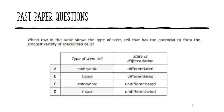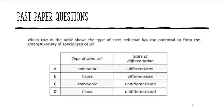Let's try another. Which row in this table shows the type of stem cell that has the potential to form the greatest variety of specialized cells? Pause the video and select your answer.